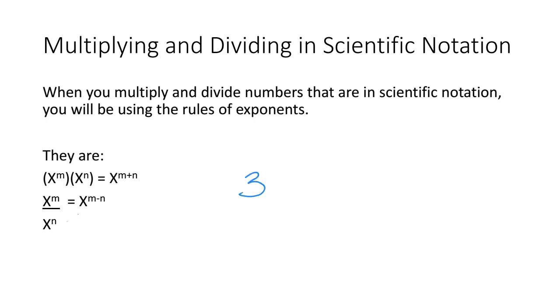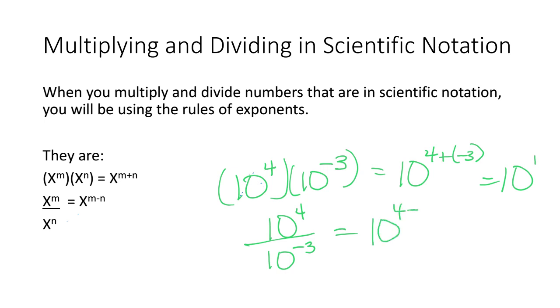We'll do the 10s just because we're going to be using all 10s here. So let's do 10 to the 4th times 10 to the negative 3rd. This is going to be 10 to the 4 plus a negative 3. Well, 4 minus 3 is a 1, so it's 10 to the 1. You've got to add your exponents. Division, you subtract them. So if it was 10 to the 4th divided by 10 to the minus 3, you're doing 10 to the 4th minus a minus 3, which is 10 to the 7th. So use that idea of the rules of exponents when you check your answers to make sure you didn't do something totally wrong.